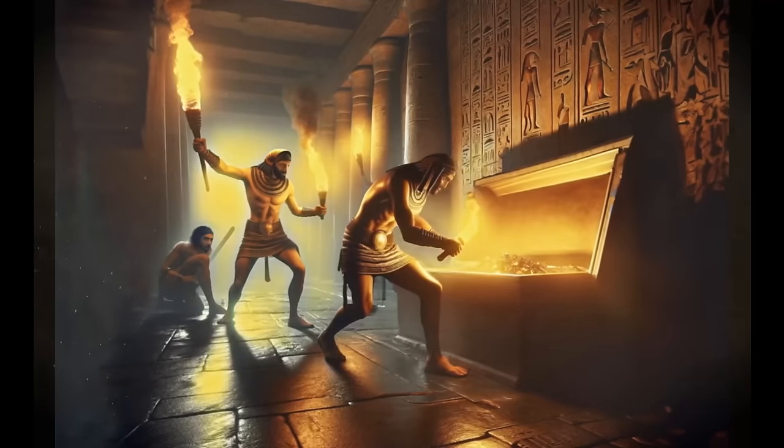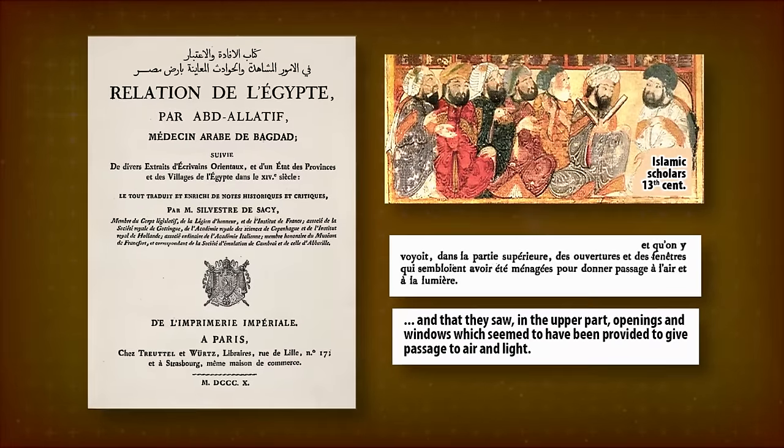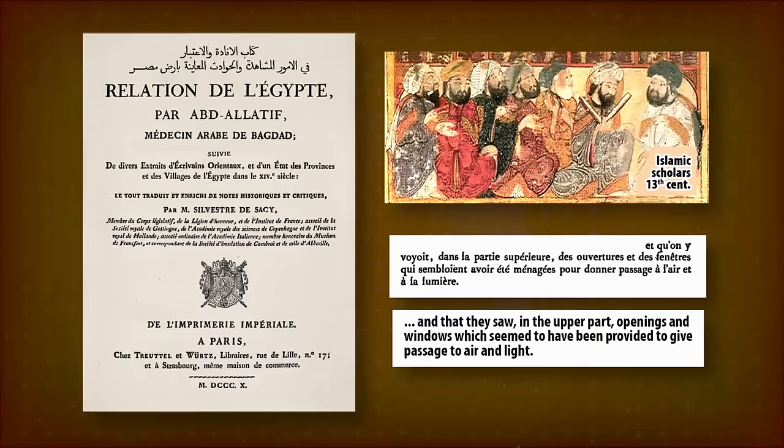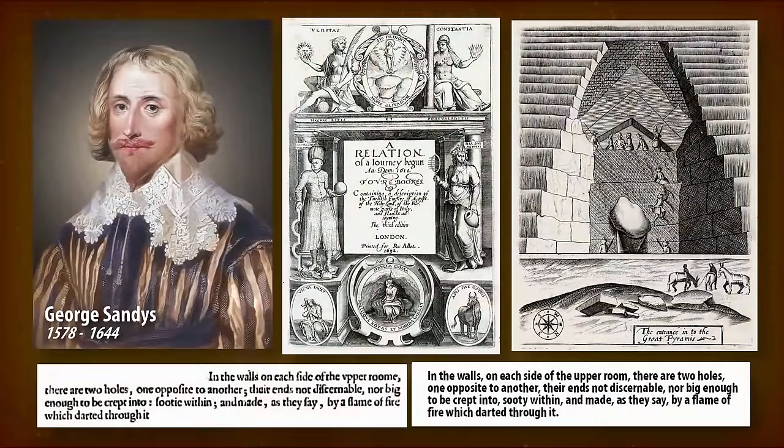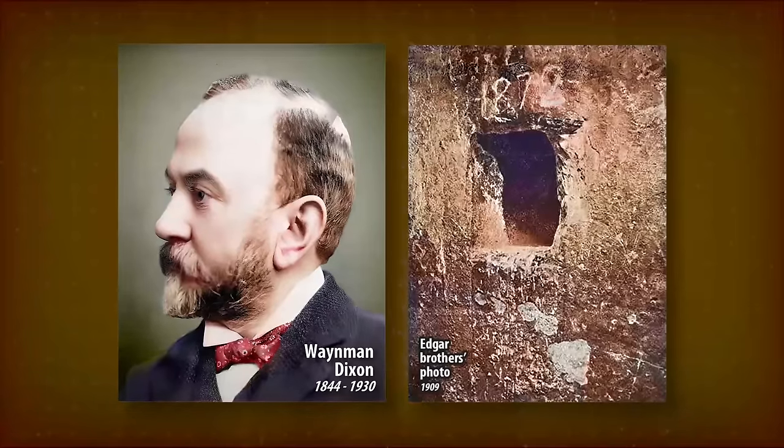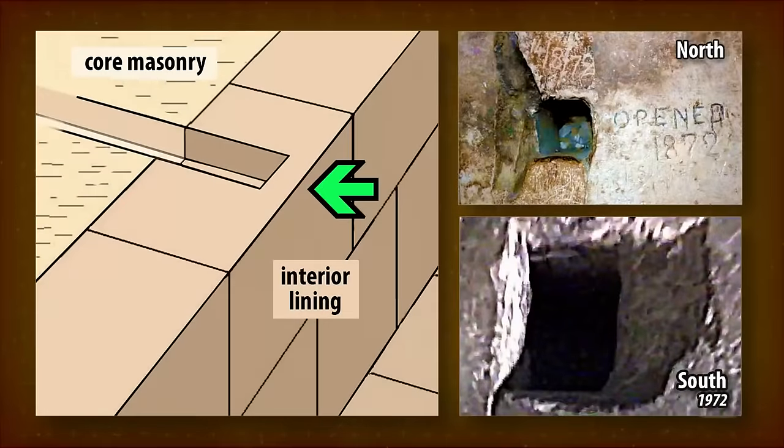The first mention of the king's chamber shafts is from the 12th century by the Arab traveler al-Baghdadi. The first direct observation put in writing is from 1610 by the English traveler George Sandys. The queen's chamber shafts were discovered by the Scottish engineer Waynman Dixon in 1872. They were hidden behind a 5-inch thick cover of seemingly untouched stone.